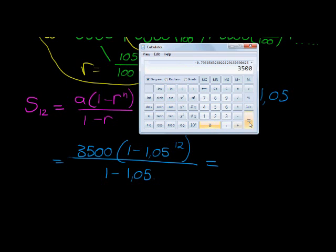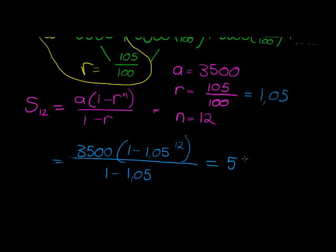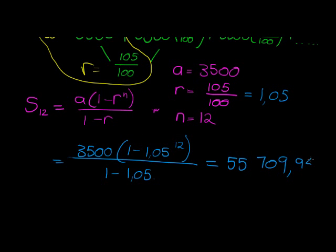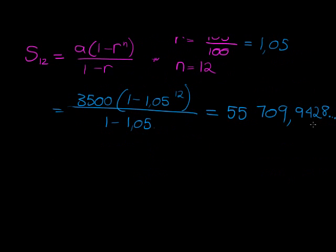What do we get? 55,789, 55,789. And let's not forsake our decimal digits: 9428. Let's keep a few of them, 9428, and it goes on. Why aren't I rounding? Because we always only round in our answers.